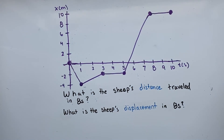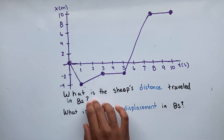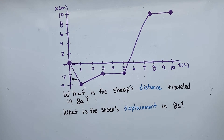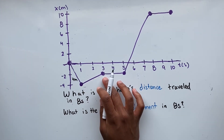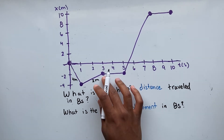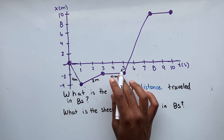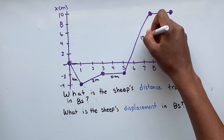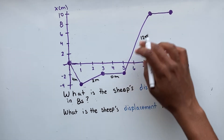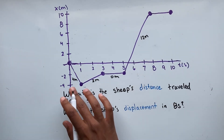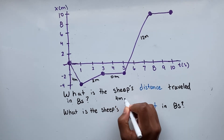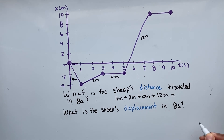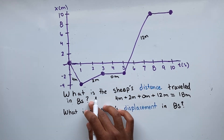Let's look at one last example. We're asked what's the sheep's distance traveled in 8 seconds and what's the sheep's displacement in 8 seconds. From 0 to 1 second, our sheep traveled 4 meters. From 1 to 3 seconds, our sheep traveled 2 meters. From 3 to 5 seconds, our sheep traveled 0 meters because they remained at negative 2. From 5 to 8 seconds, our sheep traveled 12 meters — from negative 2 to 0 is 2 meters, and 0 to 10 is 10 meters, so 2 plus 10 is 12 meters. Total: 4 plus 2 plus 0 plus 12 equals 18 meters for our distance.